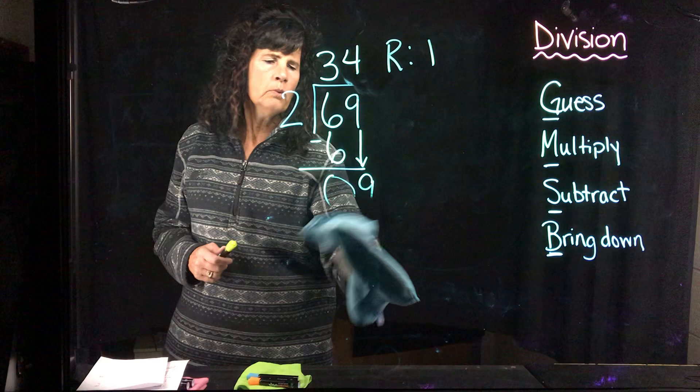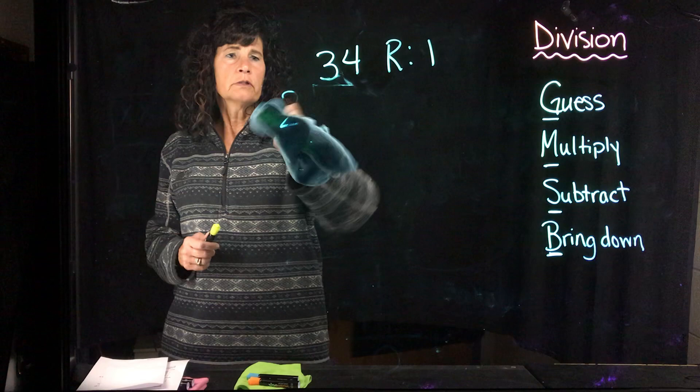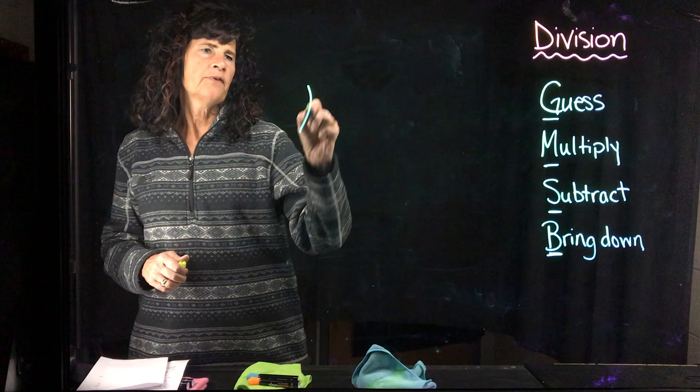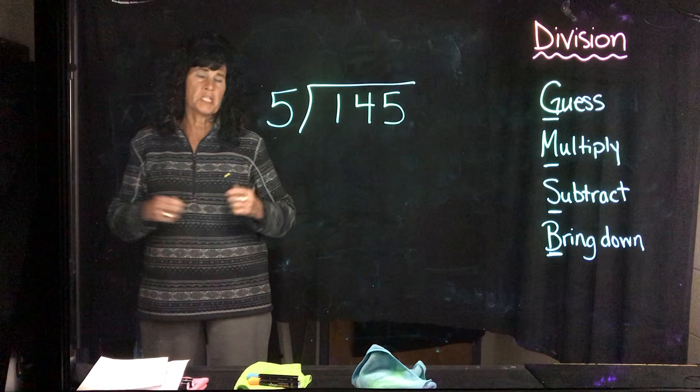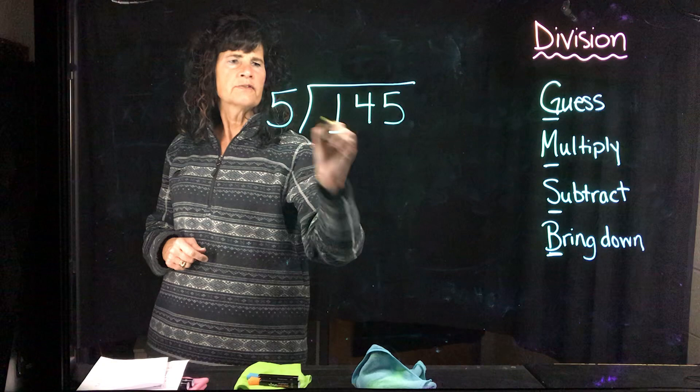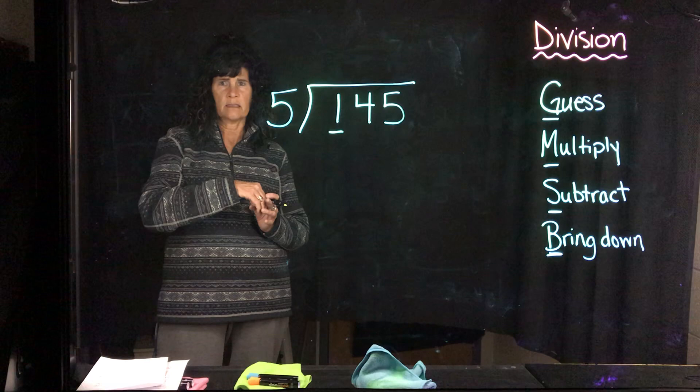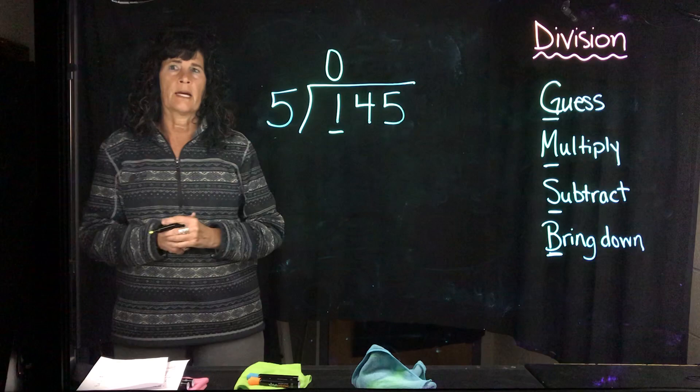Okay, alright. Let's do just one more problem. And then I'll turn you loose for some more practice. What if I had 145 divided by 5? Okay, we can do this. Alright. First thing, guess. How many 5's go into 1? 5 can't fit into 1, right? Okay. So, I'm going to put a 0 here because 5 can't fit into 1.